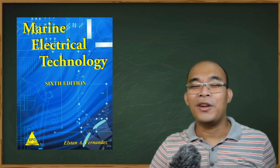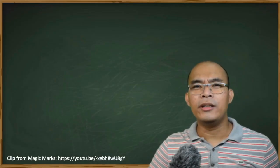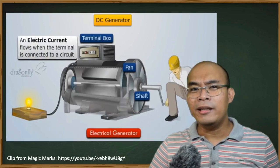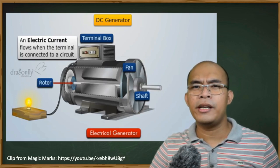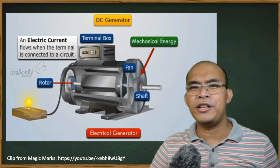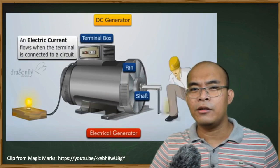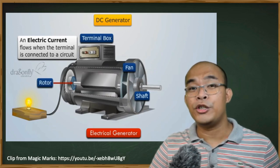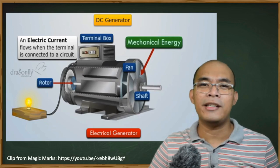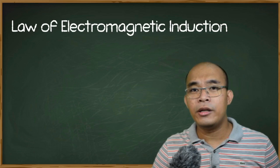By definition, an electrical generator is a machine which converts mechanical energy into electrical energy. All electric generators operate on the same principle regardless of whether they produce AC or DC. Internally, all generators produce alternating current or AC. If DC or direct current is required, a device called a commutator is used to rectify or change from AC to DC.